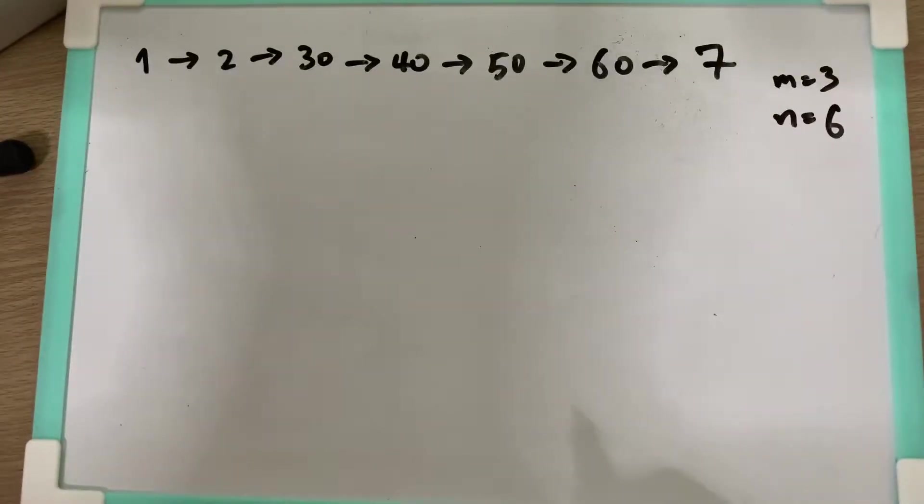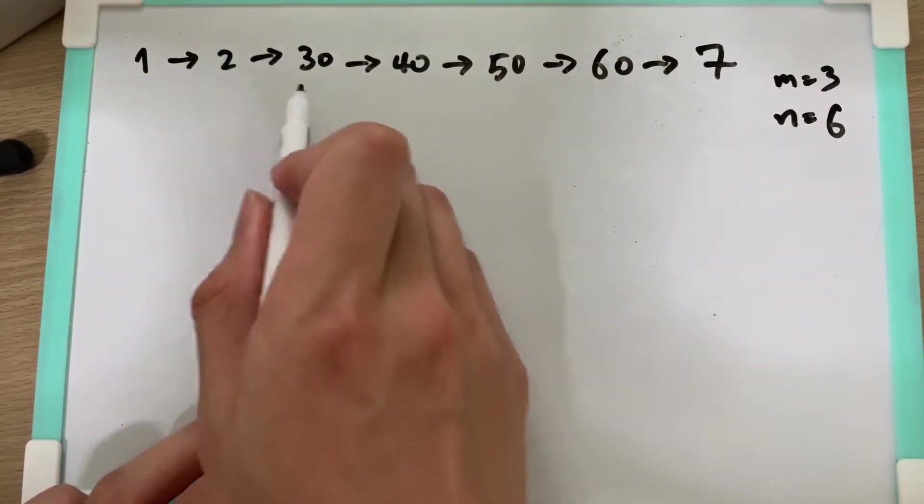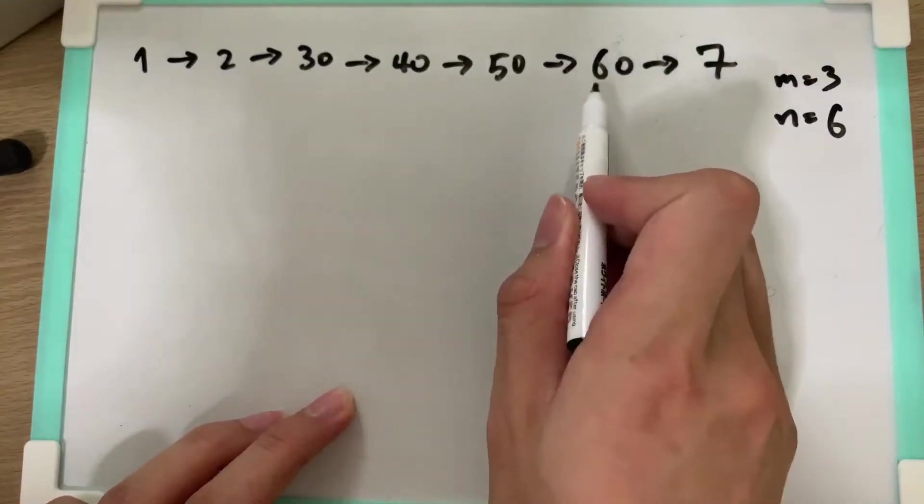Reverse a linked list between index M to N. We are indexing from 1, so index 1, 2, 3, 4, 5, 6, and 7.